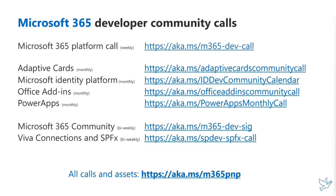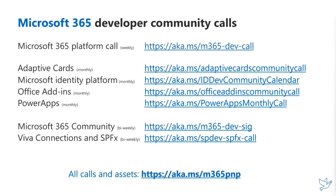And then we have community-driven calls: Microsoft 365 community, Viva Connection, and SPFx, happening on Thursdays at 7 AM Pacific time, bi-weekly. If you're wondering how to get invited, go to aka.ms/M365PMP — you can download a recurrent invite, which is the easiest way to get that invite in your calendar.